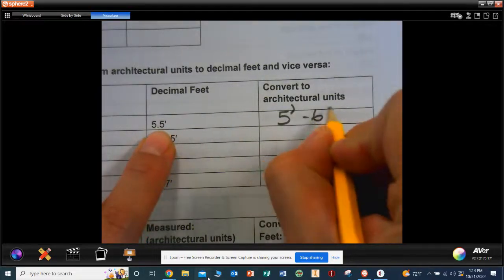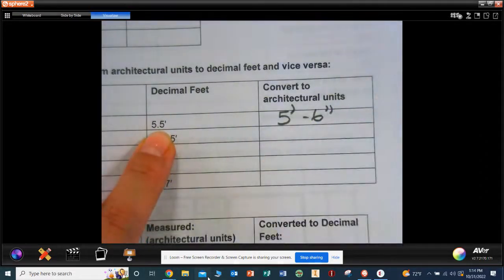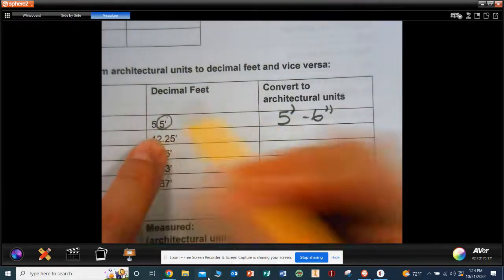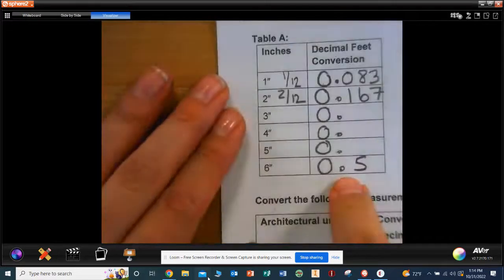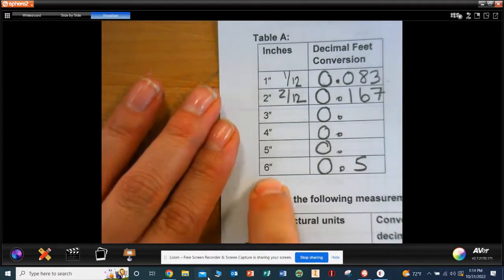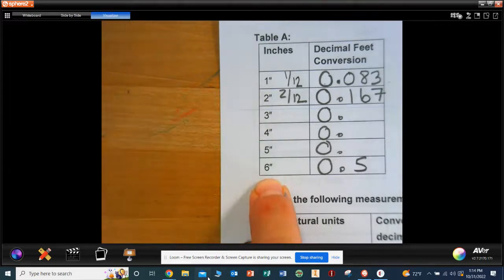6 inches. So you find this answer in your chart and you go, okay, the 0.5. Oh, that was here. The 0.5 was here. Oh, so that means it's 6 inches. So you're working backwards. Does that make sense? You're working backwards.